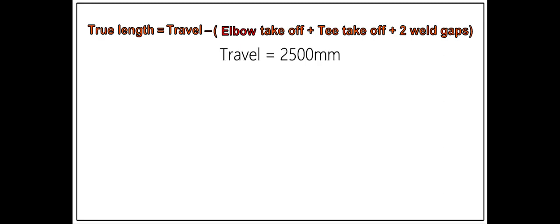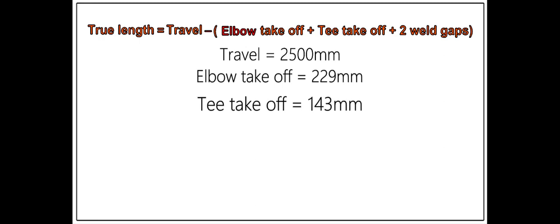The travel length is 2500 millimeters. Elbow takeoff equals 229 millimeters. Tee takeoff equals 143 millimeters. Two weld gaps equals 6 millimeters.